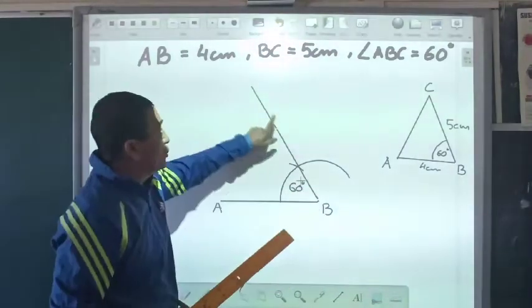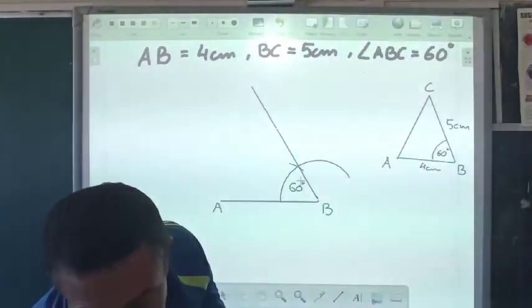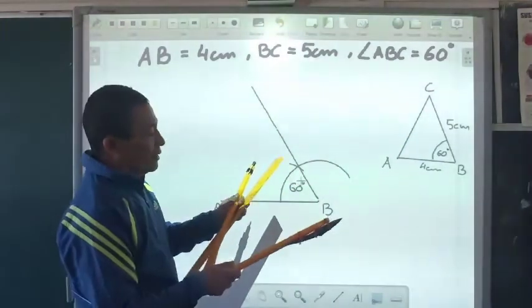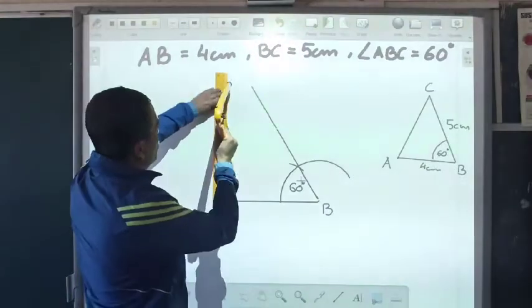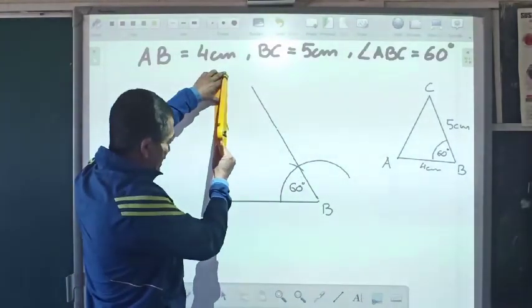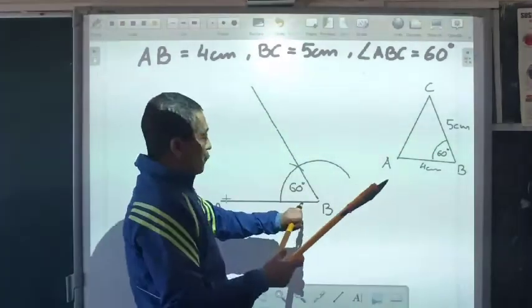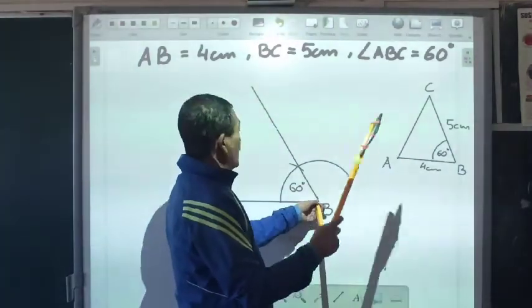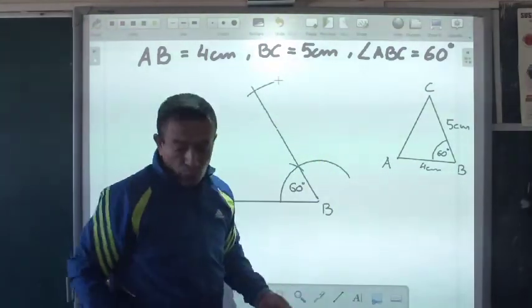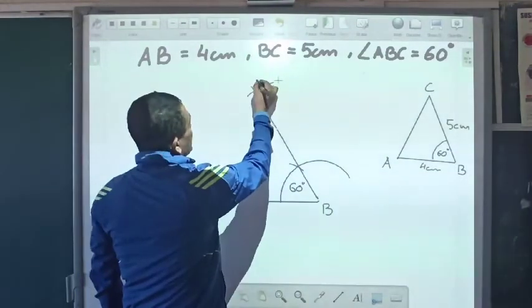Now B to C should be 5 cm. So I take 5 cm in the compass. I can measure it on the ruler. So let's take this to be 5 cm. Now from B, I will have to make an arc. So wherever it crosses, that point is point C.